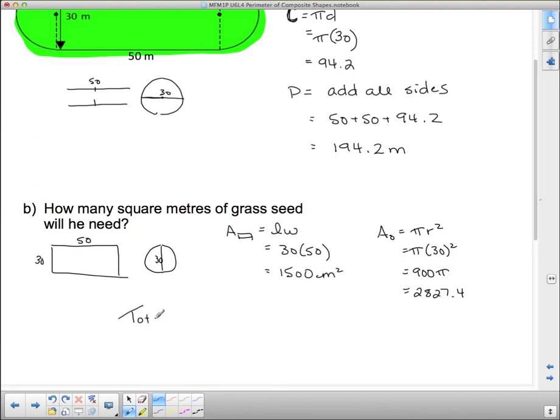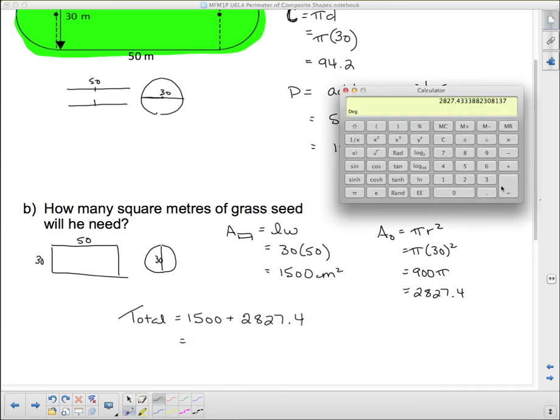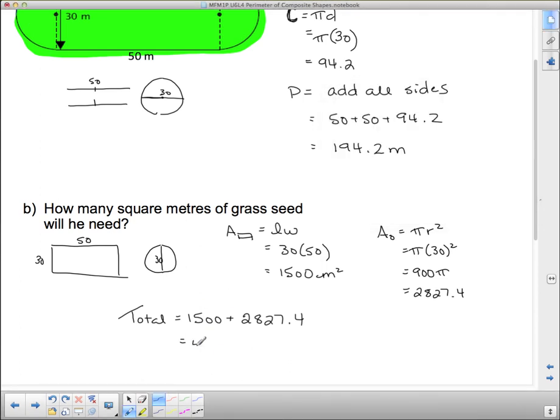And now to get the total area, total equals 1,500 plus 2827.4. Pull up the calculator again. Let's just add 1,500 to that. 4327.4, and that's in square meters.